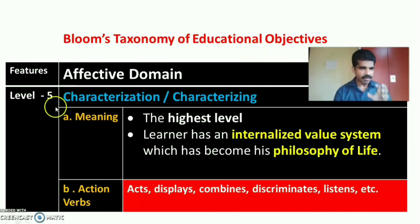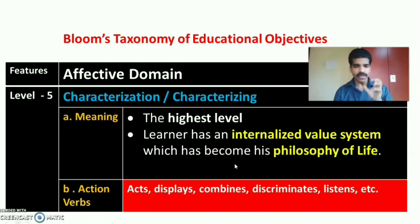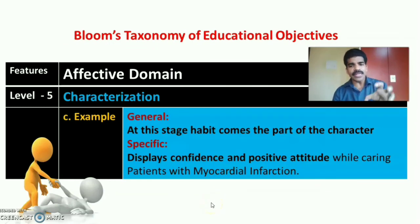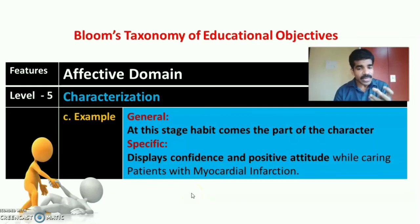The fifth and last level of the affective domain is characterization or characterizing — the highest level of attitude development. Here, the student has a fully internalized value system that has become part of their philosophy of life. Action verbs include: acts, displays, combines, discriminates, listens. In the general example, the habit becomes part of the character; whenever a situation arises to help the poor, the student acts with a positive attitude. Specifically, whenever a patient is admitted with MI, the student acts confidently and with positive attitude to care for such patients.